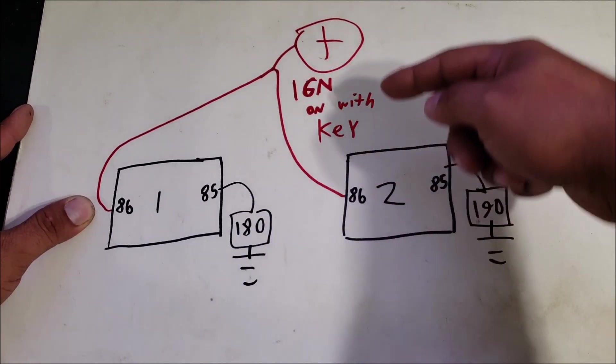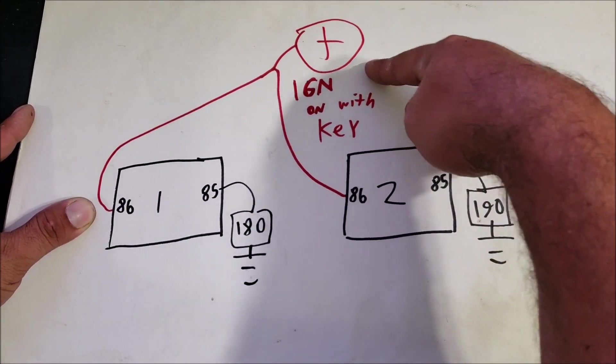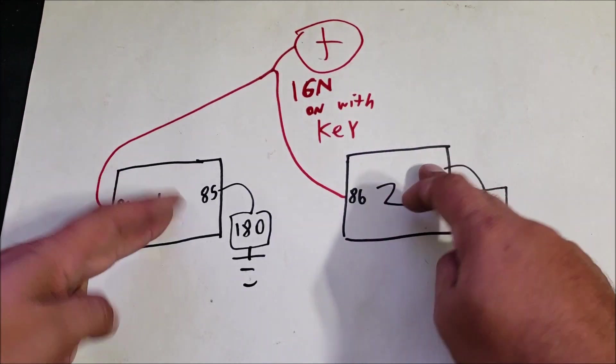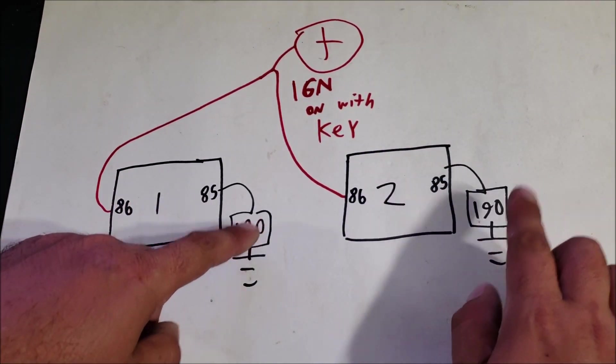Let's talk about how you fix it. Super simple - you just run 86 to ignition on with the key or fuse box wherever you can find on with the key. That way it's going to power the relays and the sensors are still going to turn them on or off.